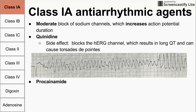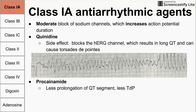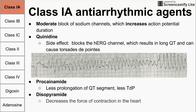Another class 1A antiarrhythmic agent is procainamide, which is a little better than quinidine because it does less prolongation of the QT segment. One last example of a 1A drug is disopyramide, which decreases the force of contraction in the heart.